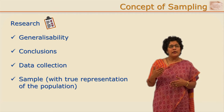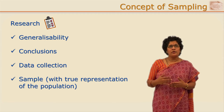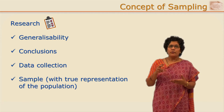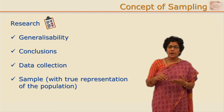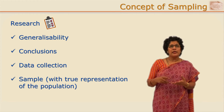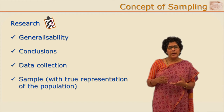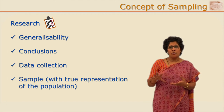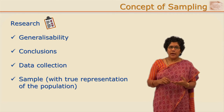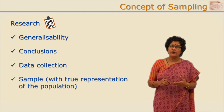In order to make the generalizations more authentic, it is very essential that the data is collected from authentic resources and in authentic form. Research is a very rigorous process — a lot of time, energy, and intellect goes into it, and lot of deliberations go into finalizing the various decisions. If one has to study a given larger group completely, a lot of manpower, resources, time, and financial resources would be needed.